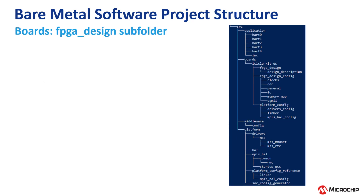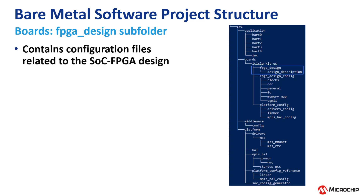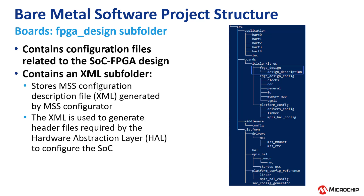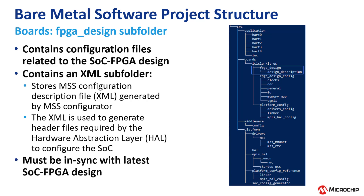The first mandatory subfolder is the FPGA Design folder. This contains the configuration files related to the SOC FPGA design. This folder contains an XML subfolder called Design Description. The Design Description folder contains the MSS Configuration Description file in XML format, which is generated by the MSS Configurator. The XML is used to generate header files required by the hardware abstraction layer to configure the SOC. This must be in sync with the latest SOC FPGA design. We can use the standalone MSS Configurator or the MSS Configurator included in Libero to generate this XML file.